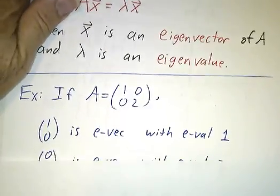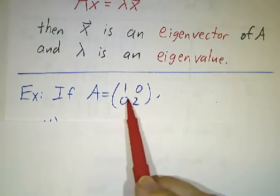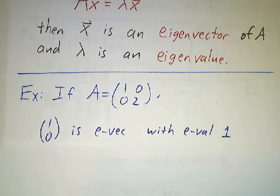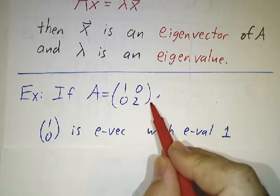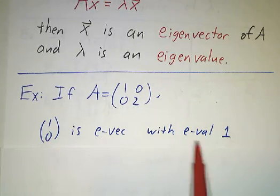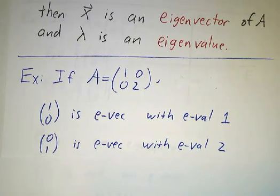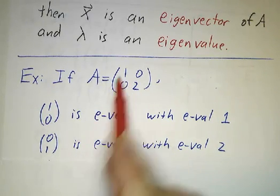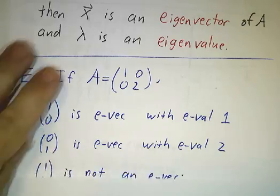For example, let's start with one of the simplest matrices: the diagonal matrix with entries 1, 0, 0, 2. The vector (1, 0) is an eigenvector, because if you multiply that matrix by (1, 0) you get (1, 0). So (1, 0) is an eigenvector with eigenvalue 1. And (0, 1) is an eigenvector with eigenvalue 2, because multiplying the matrix by (0, 1) gives (0, 2).